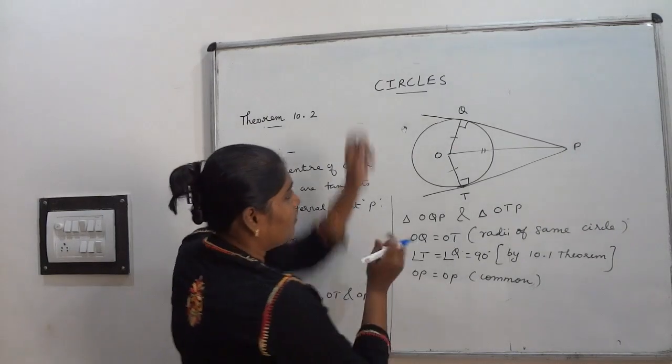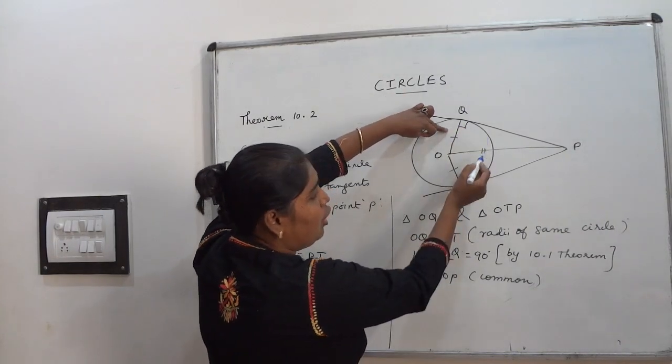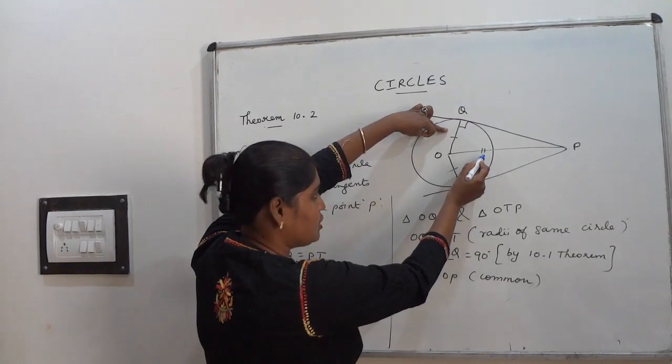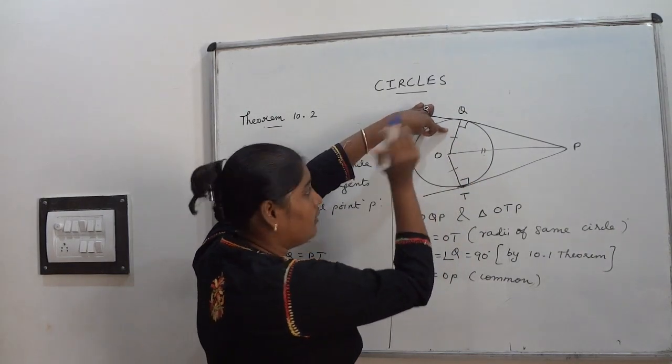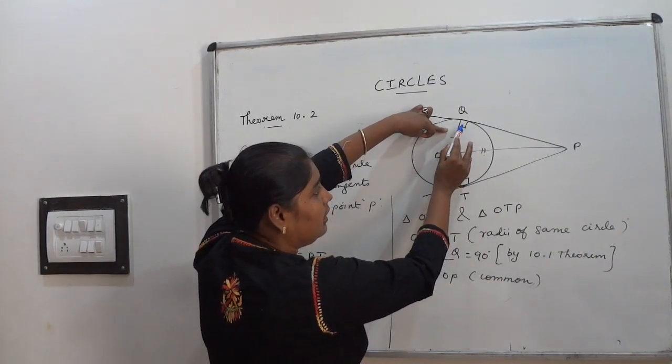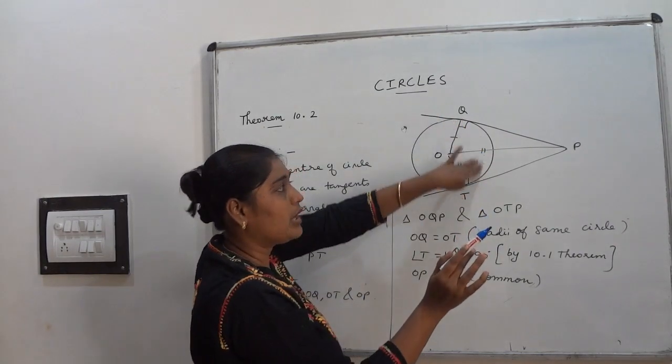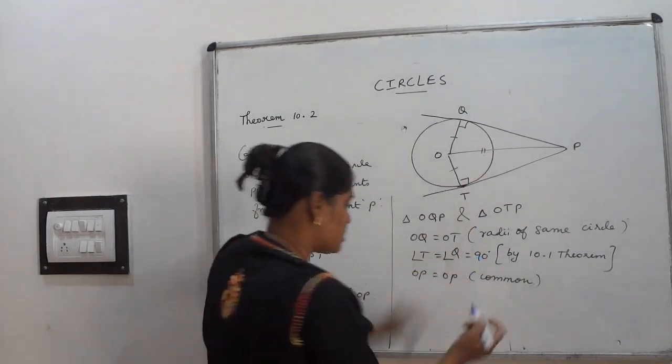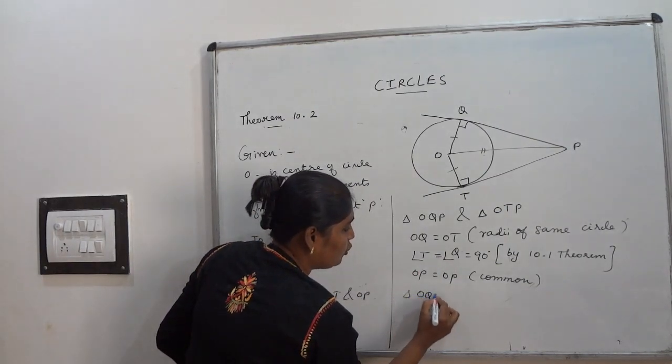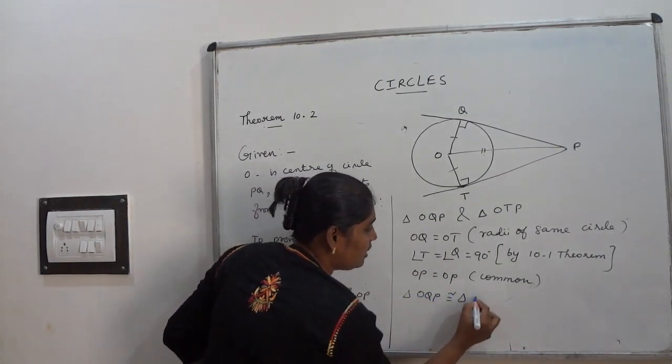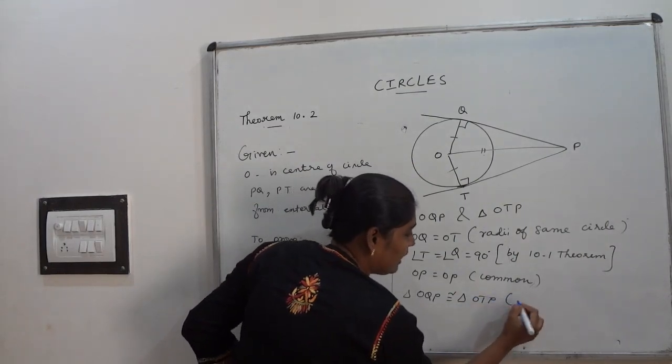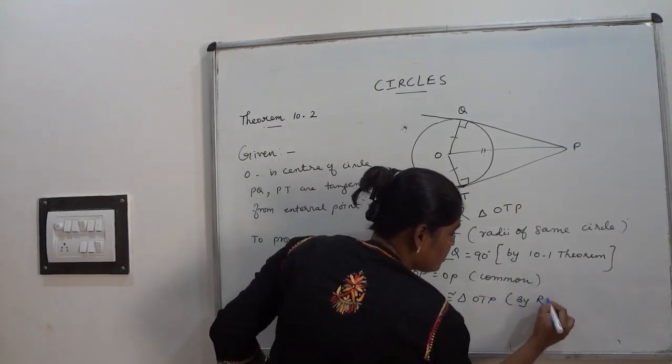Why? See, right angle, opposite side that is called hypotenuse, and one more side. From that I can tell right angle that is R, H and S by RHS. Both triangles are congruent. So write it here. Triangle OQP is congruent to the triangle OTP by the rule RHS.